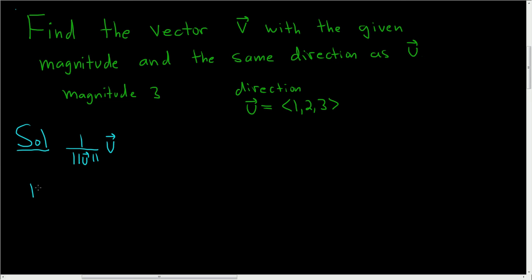So the magnitude of u is the square root, and to figure this out, you just square the components and add them all up. So 1 squared plus 2 squared plus 3 squared. So this is the square root: 1 squared is 1, 2 squared is 4, and 3 squared is 9. So we get 5 plus 4, which is 14.